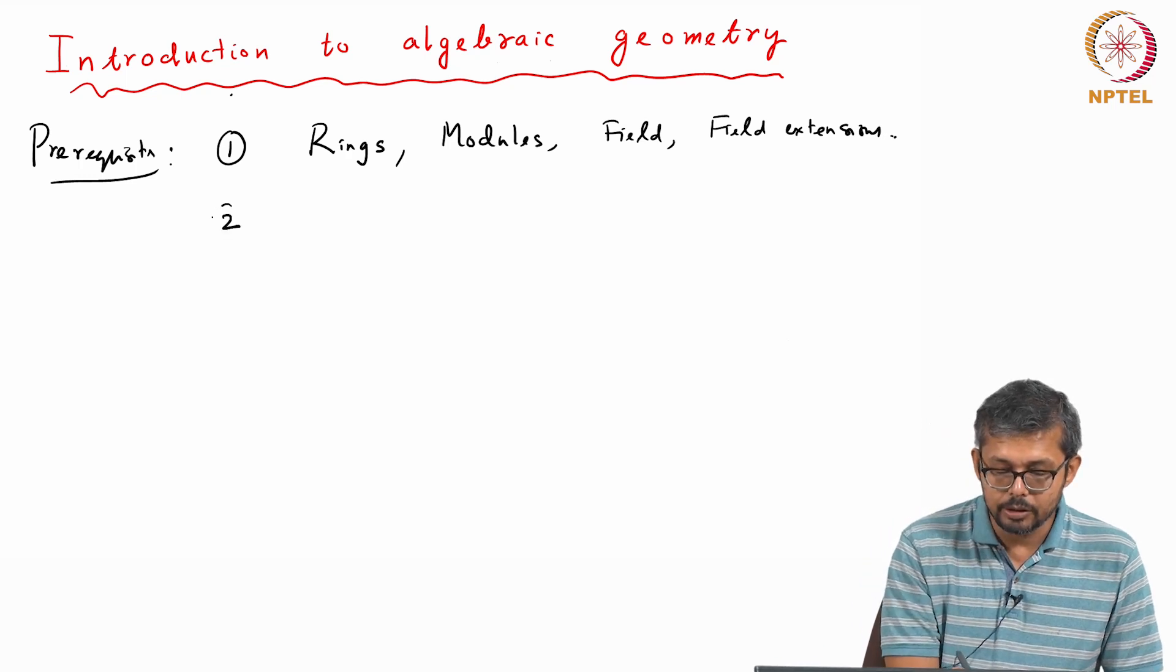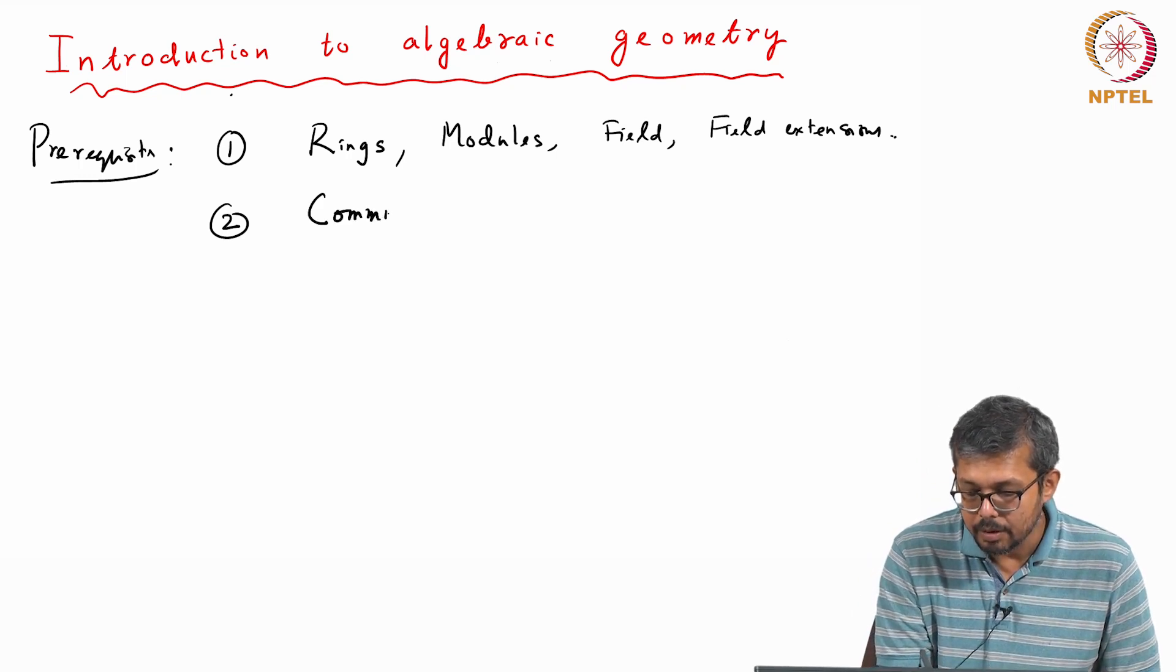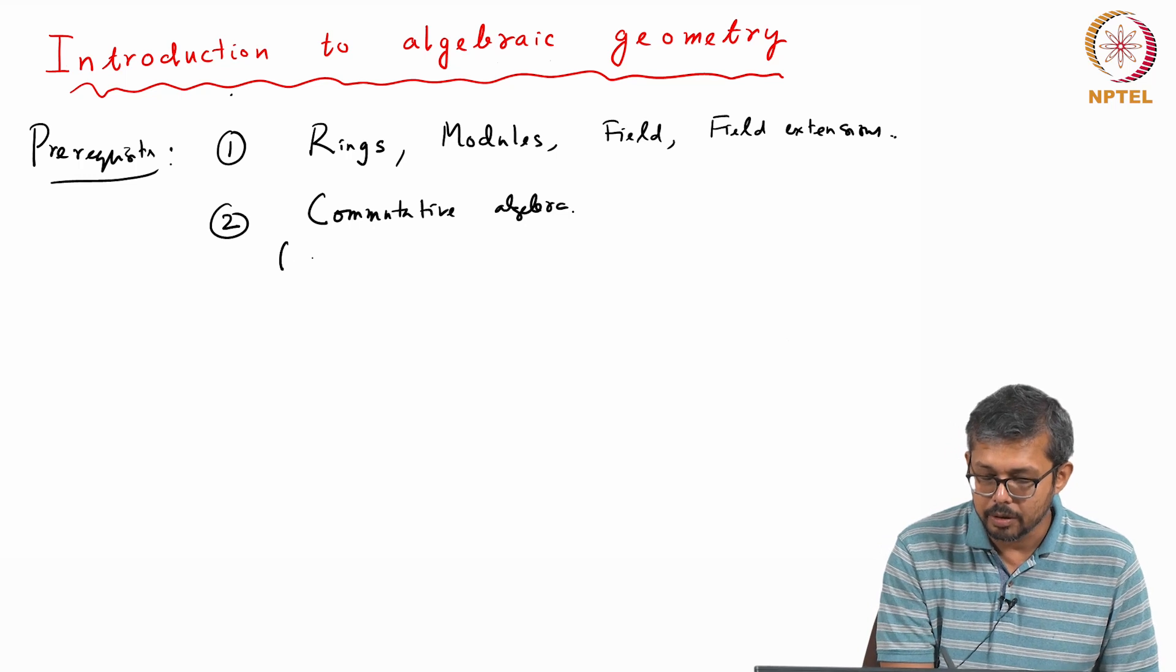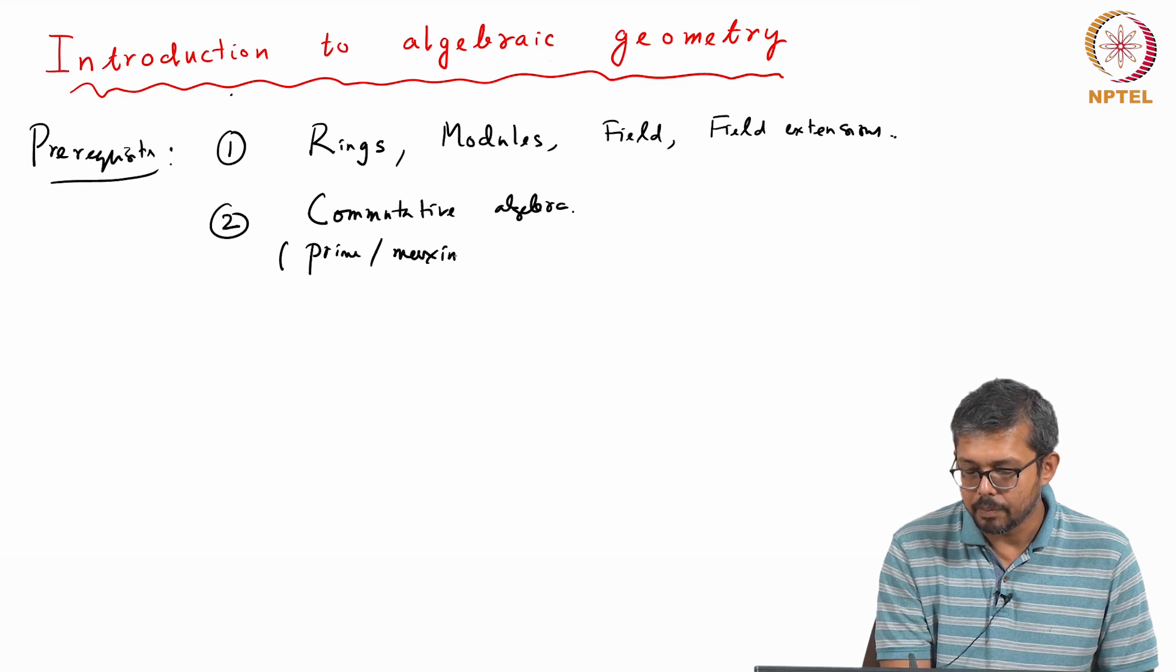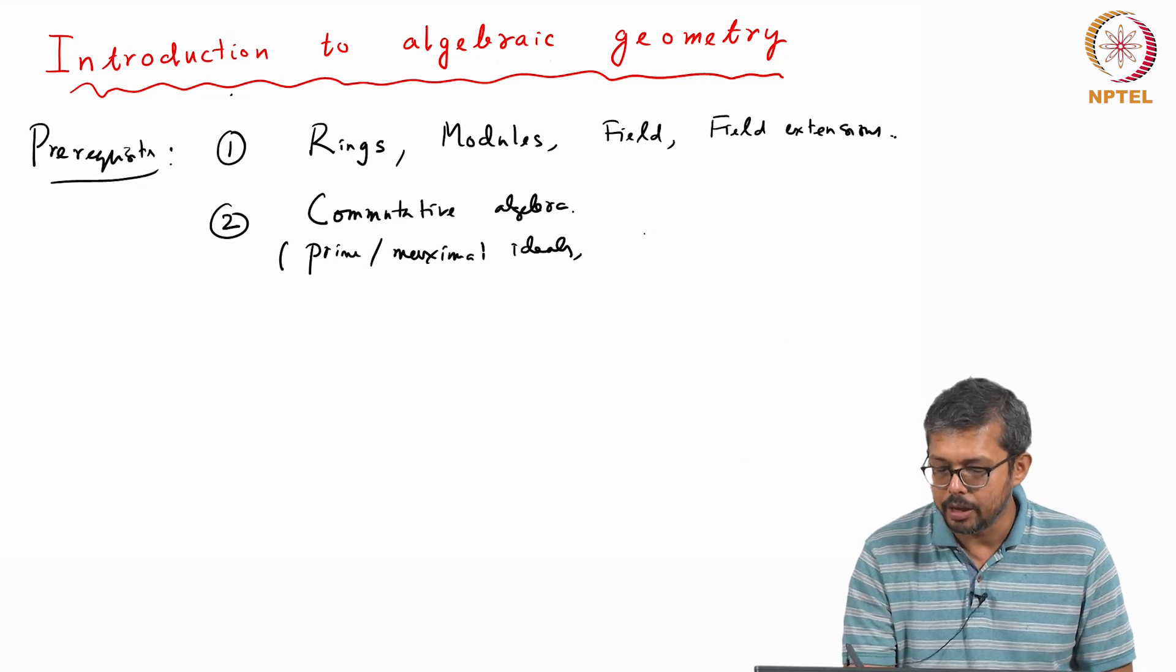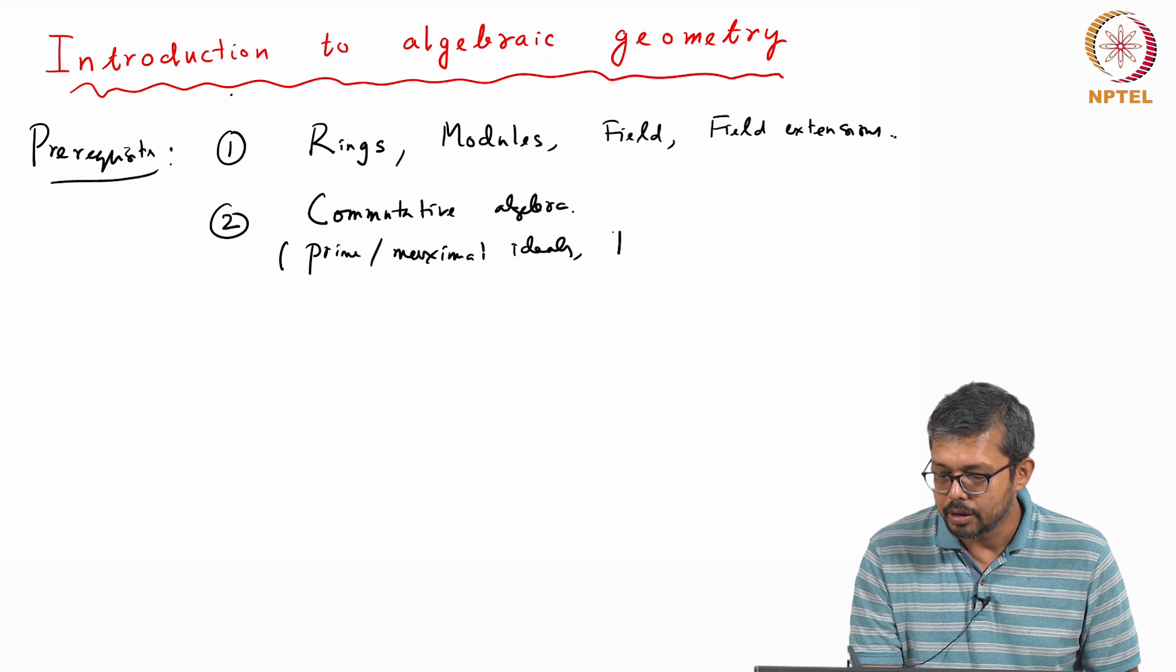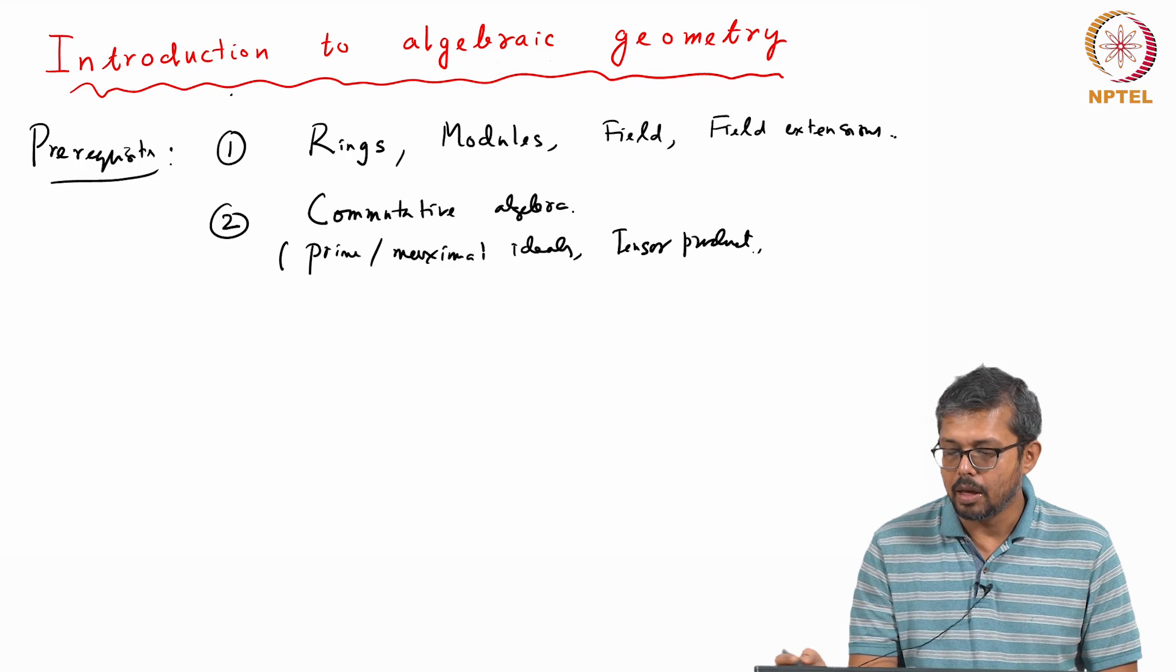And also, I assume some knowledge in commutative algebra is required. For example, I assume that people are familiar with what are prime ideals, maximal ideals and what is a tensor product of two rings or two modules over a ring. Here we assume all rings are commutative with identity, tensor product and localization.